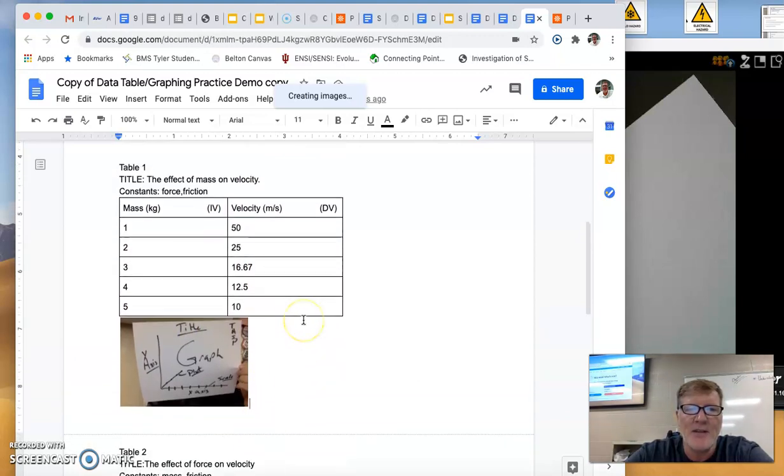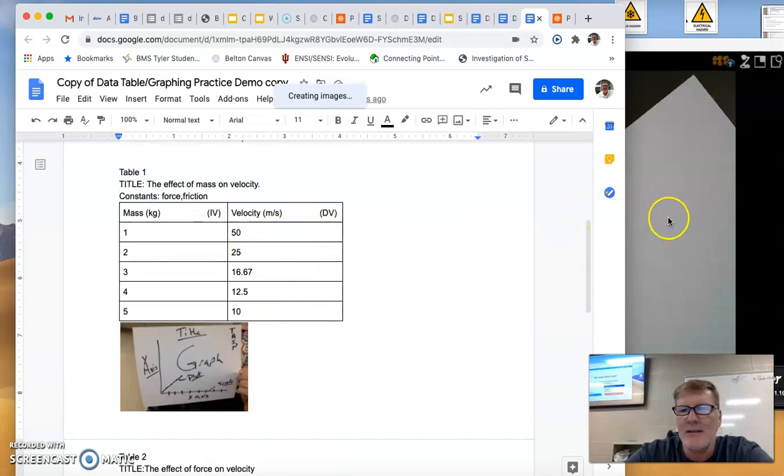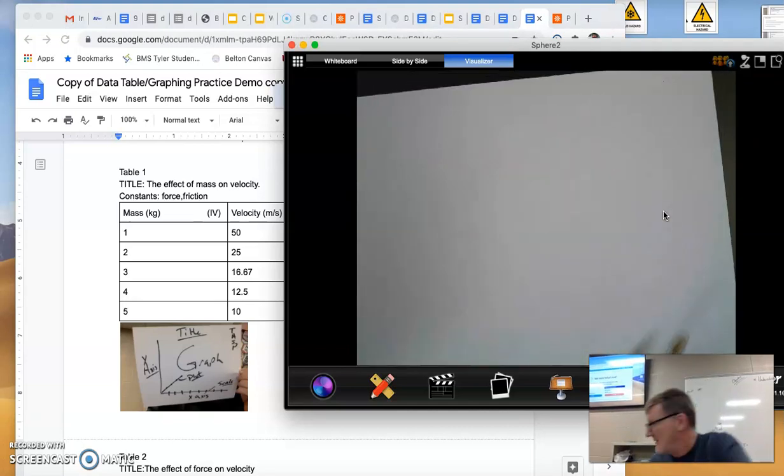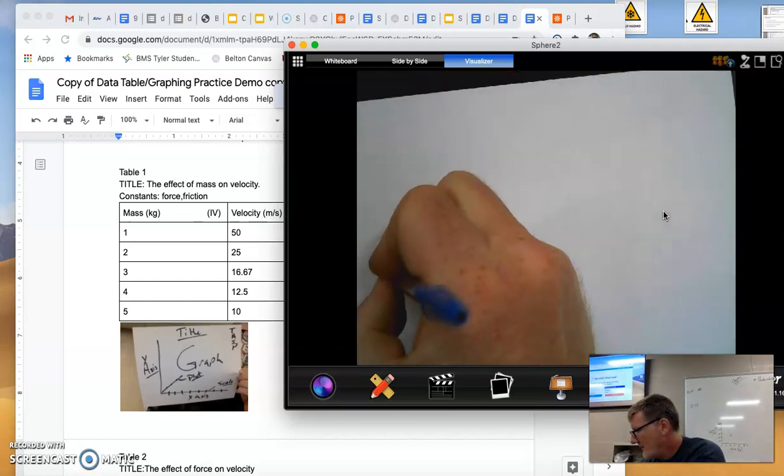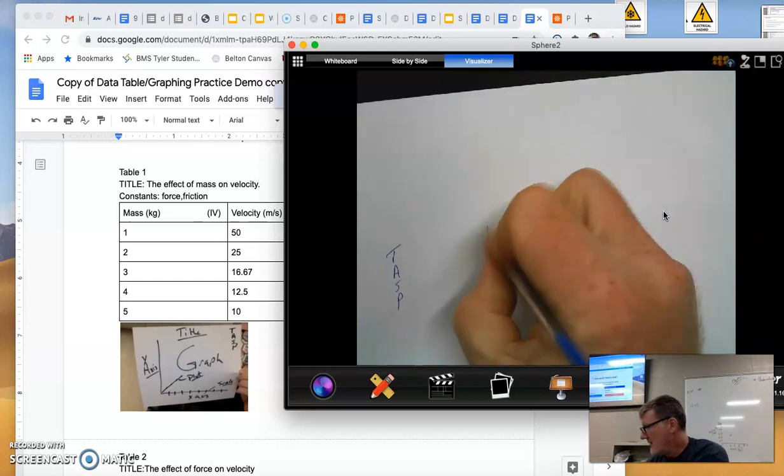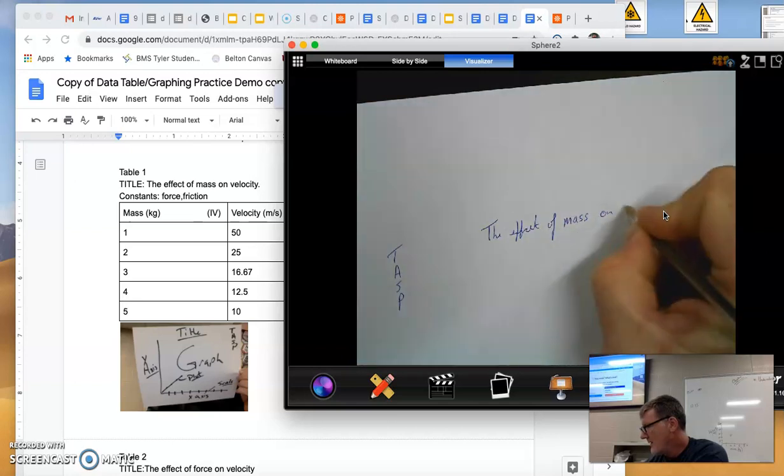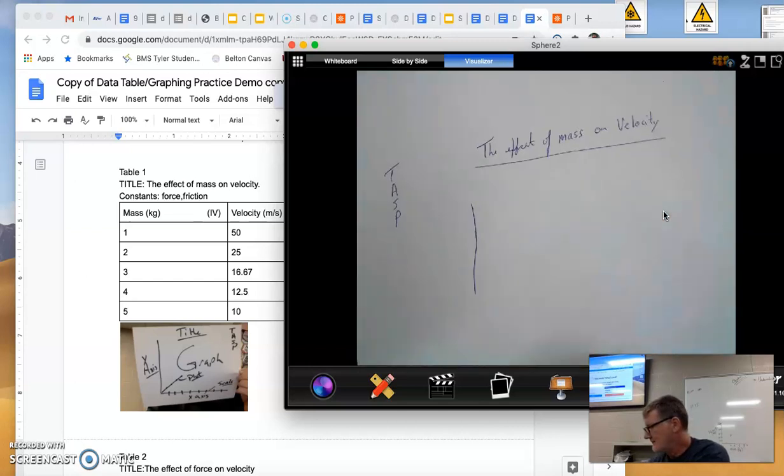Then put a picture of your graph right here. So to graph this data, I'm going to do this under my document camera here next to me. I need title axis scale plot. I'll put over there on the side to remind me my title, the effect of mass on velocity. I'll set up an x and y axis. I'm going to start at 0. And my x-axis is mass, kilograms.